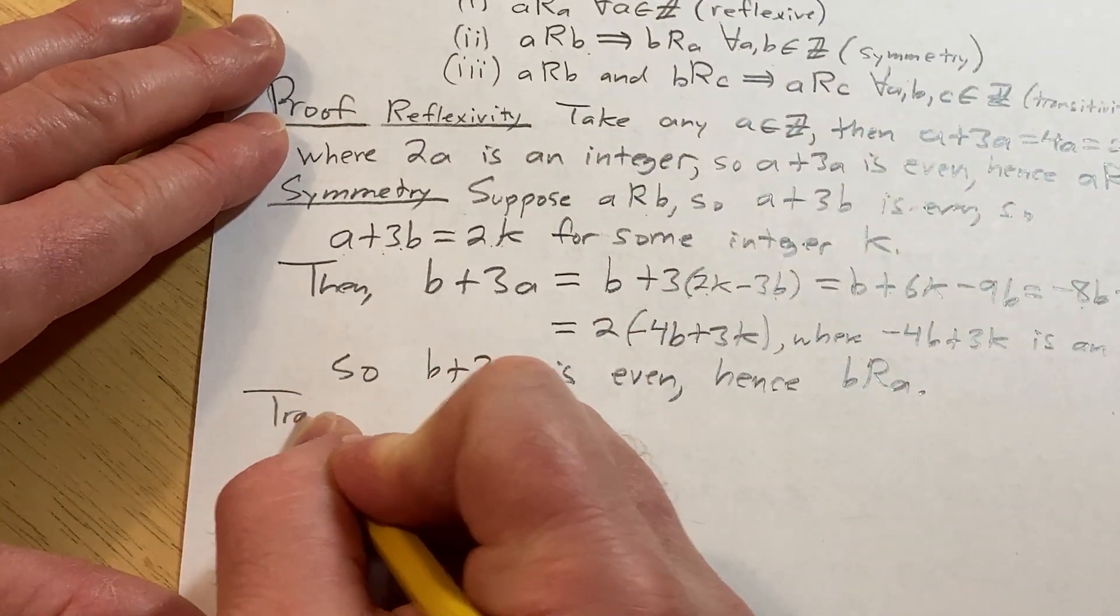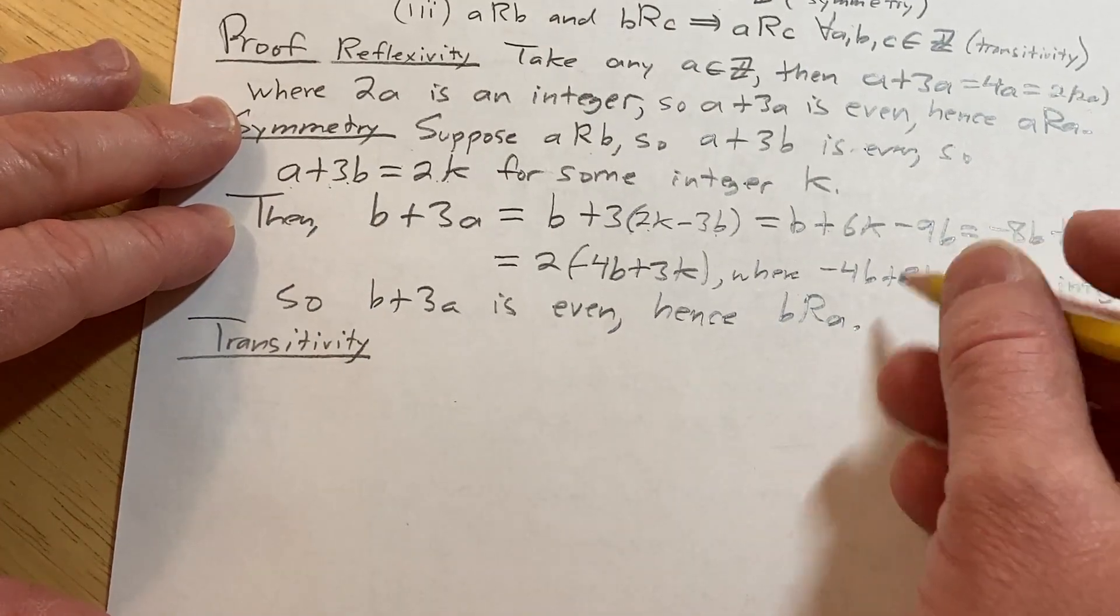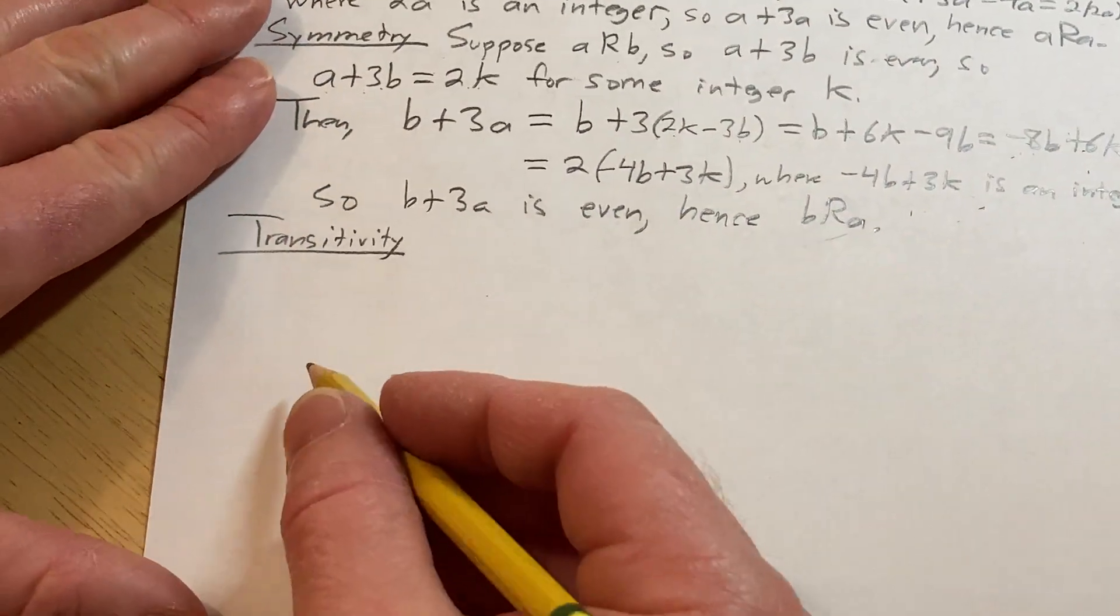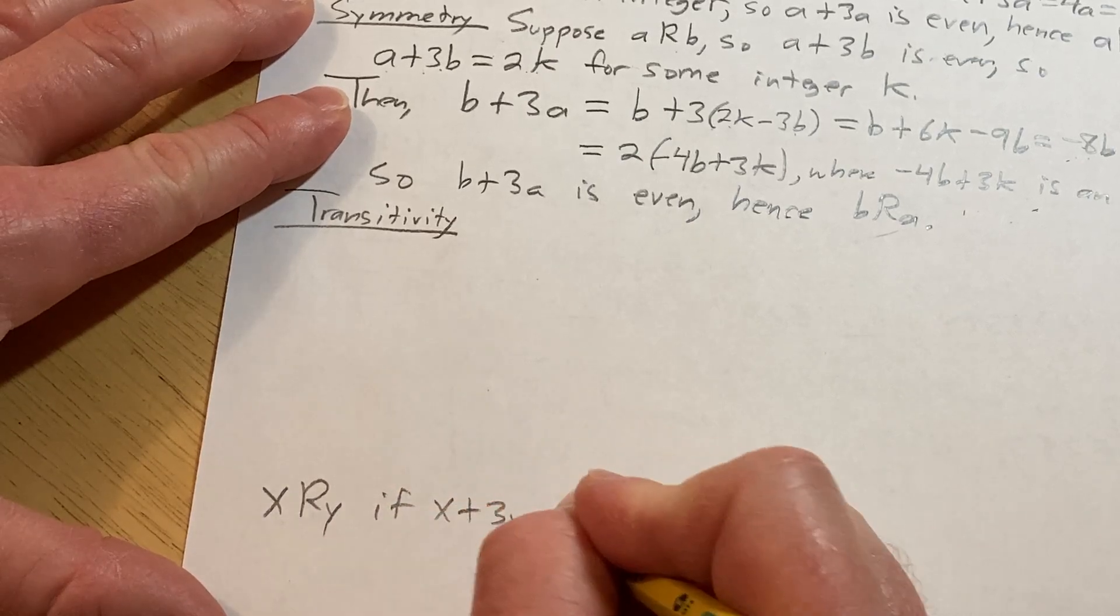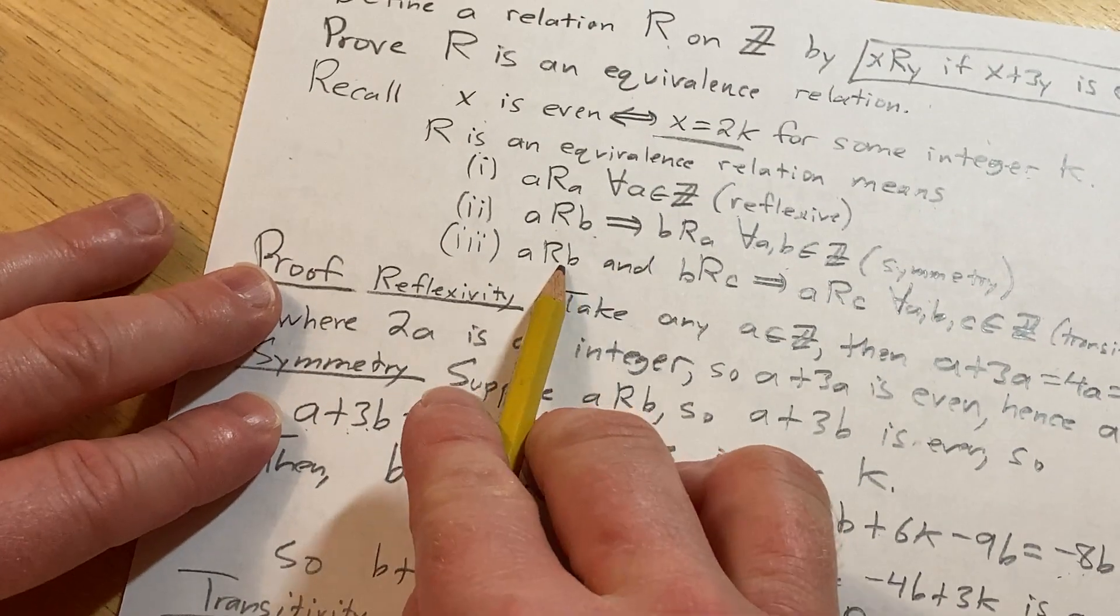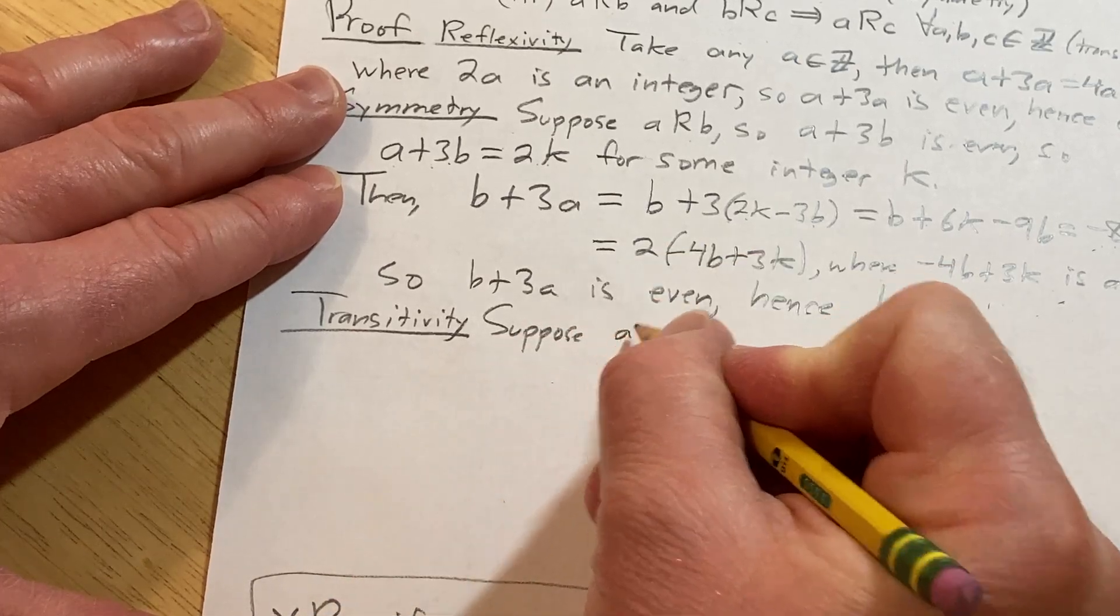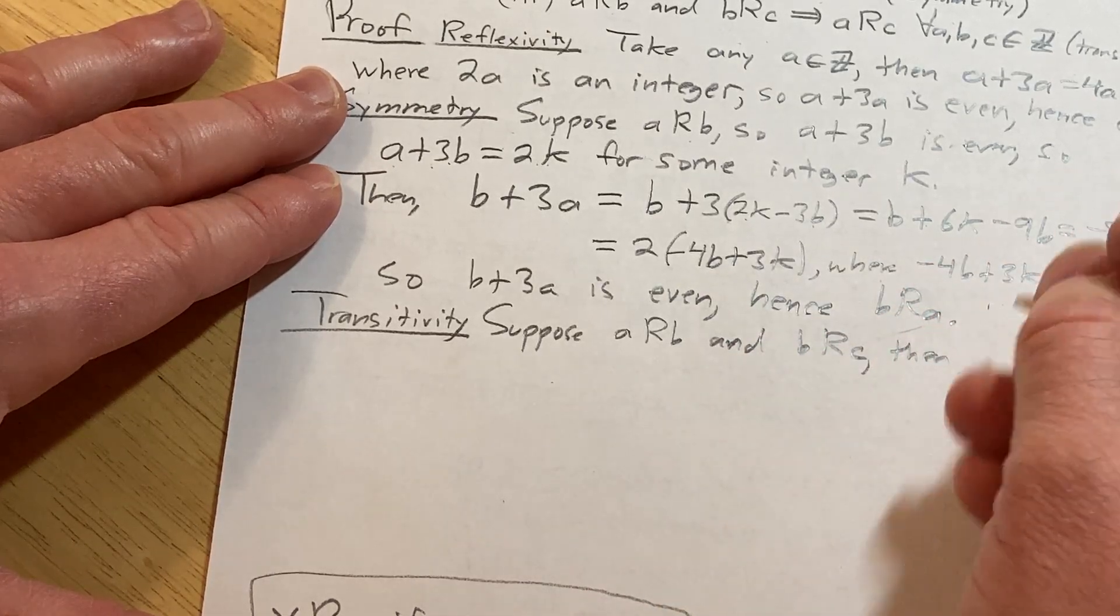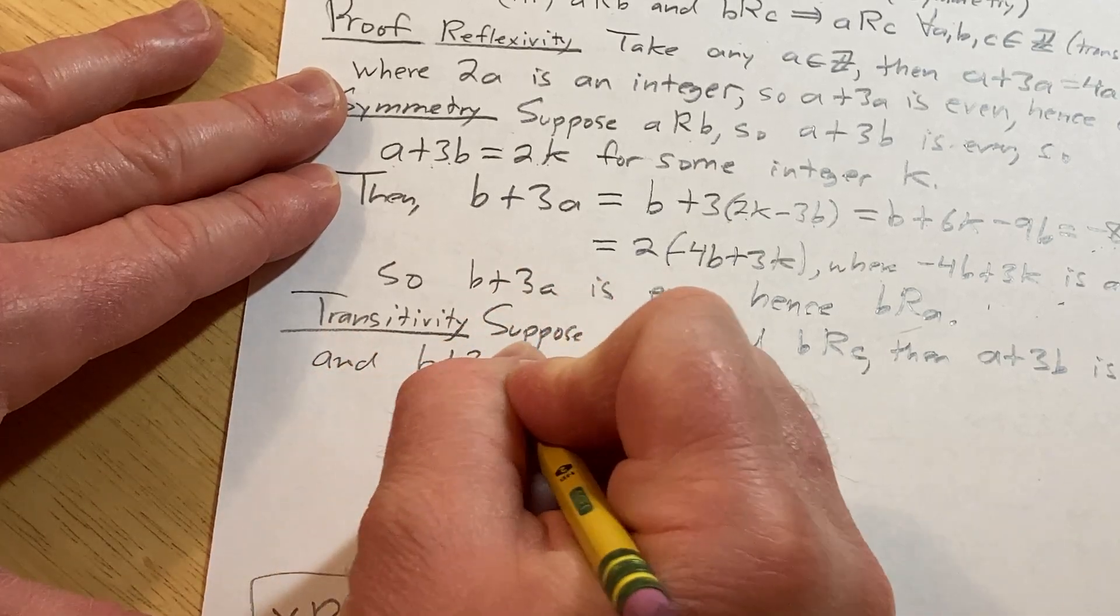And the last one is transitivity. I'm going to write the relation down again over here just because you can't see it anymore. So x related to y if x plus 3y is even—that's our relation. For transitivity we assume that a is related to b and b is related to c, and then we have to show that a is related to c. So suppose a is related to b and b is related to c. Then that means that a plus 3b is even and b plus 3c is even.